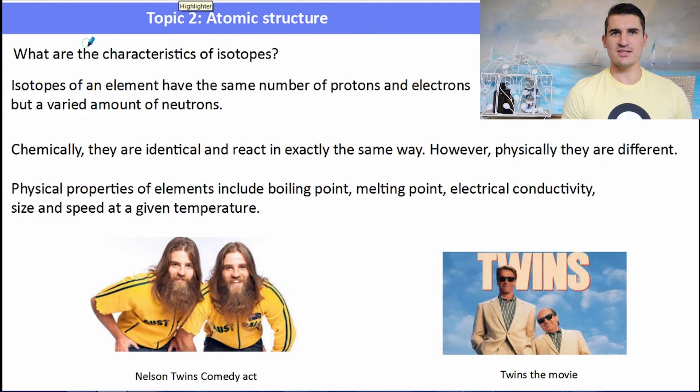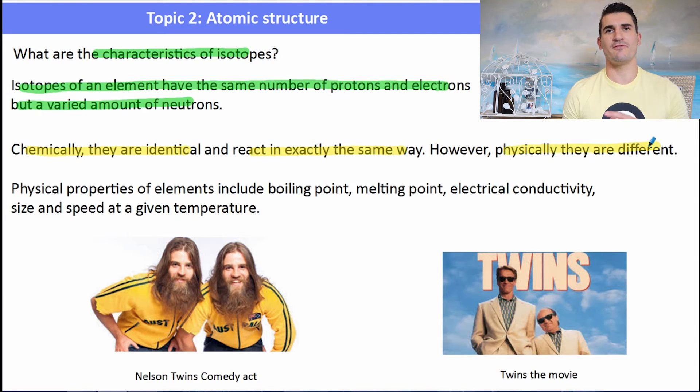What are the characteristics of isotopes? Isotopes have the same number of protons and the same number of electrons, but a varied number of neutrons. Because their electrons are the same, chemically, they react in the exact same way. Chemically, they are the same. However, physically, they are quite different. Physical properties include things like boiling point, melting point and electrical conductivity and speed that they would move at any given temperature. You can kind of think of them as like twins. We have twins that look the same, they are the same, then that means that they're chemically the same. Chemically, they are exactly the same.